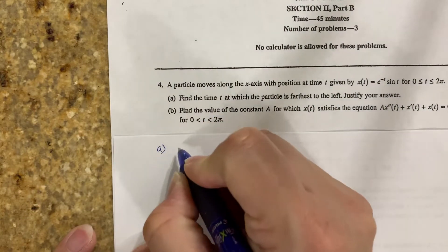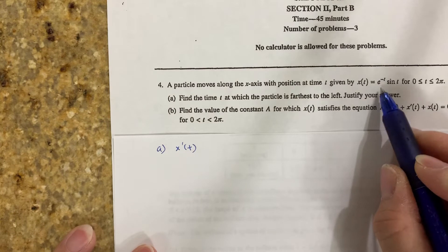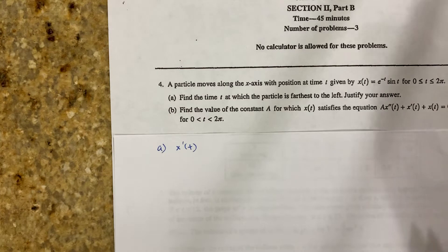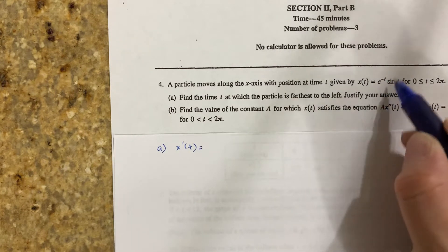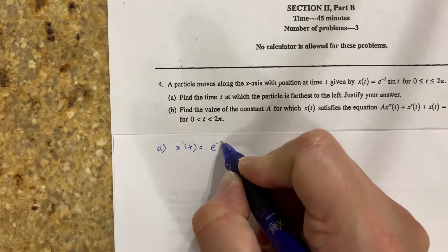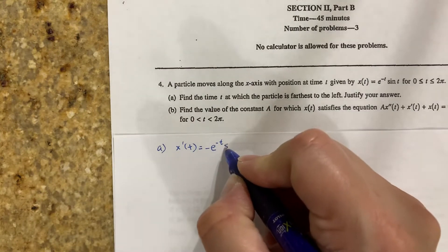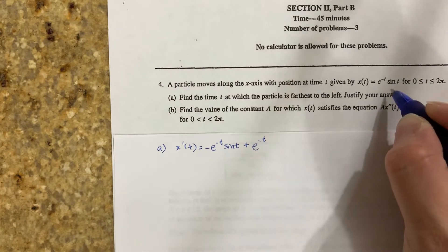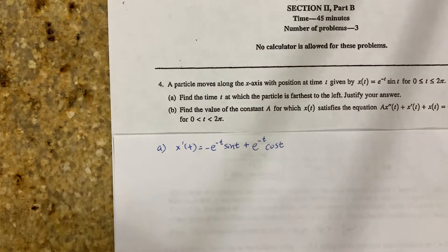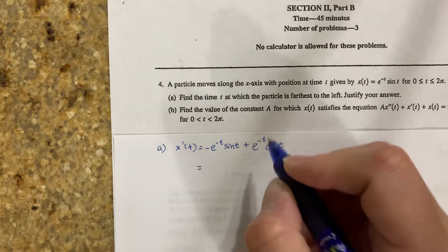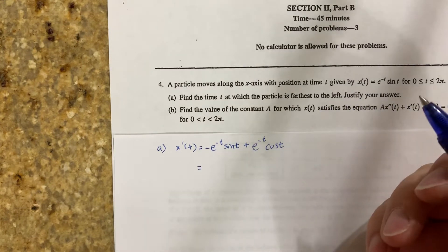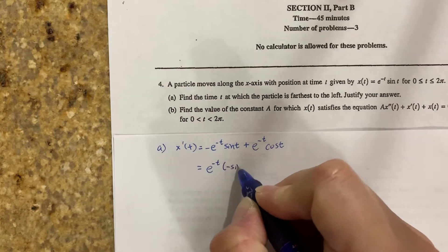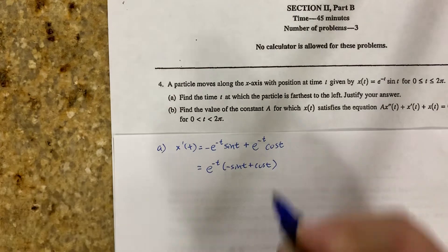In part A, you will find x prime of t. Since this is e to the negative t times sine of t, there are two t's here — you need to use the product rule. The derivative of the first, e to the negative t, is negative e to the negative t, times sine of t, plus the original e to the negative t times the derivative of sine of t, which is cosine of t. Factoring out e to the negative t, we get e to the negative t times negative sine of t plus cosine of t.